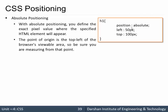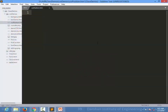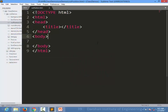To use absolute positioning in CSS, we specify the attribute 'position' with the value 'absolute'. We can then specify 'left: 50px', meaning we want our h1 to be 50 pixels from the left, and 'top: 100px' to be 100 pixels from the top. So we specify position, then how many pixels from left and how many from top.